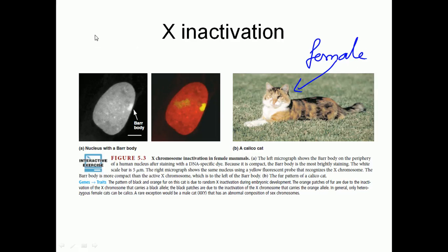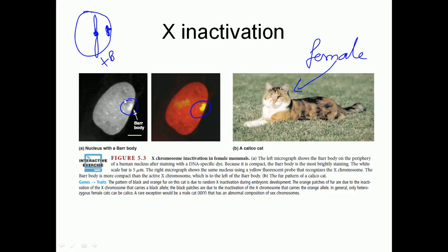The process keeps one X chromosome active while the other chromosome is condensed into a smaller one and attached to the nuclear envelope. This is the nucleus, and this is that chromosome — very condensed — while other chromosomes are larger. This small condensed chromosome is known as the Barr body.